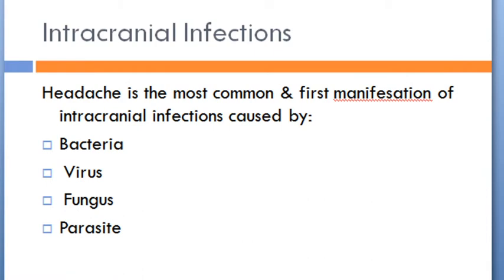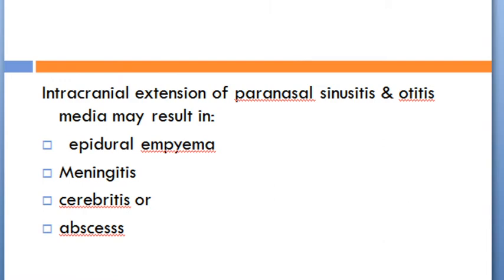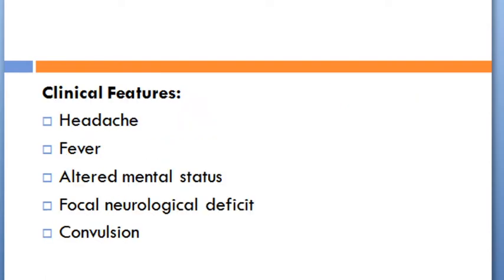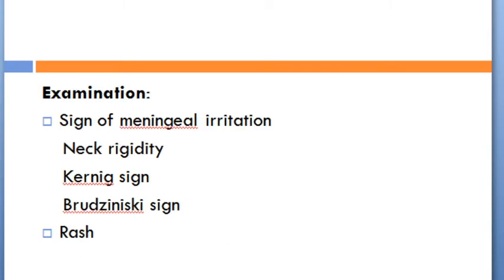Intracranial infection: headache is the most common and first manifestation of intracranial infection caused by bacteria, virus, fungus, or parasites. Intracranial extension of paranasal sinusitis and otitis media may result in epidural empyema, meningitis, cerebritis, or abscess. Clinical features include headache, vomiting, altered mental status, focal neurological deficit, and convulsions. On examination there may be signs of meningeal irritation such as neck rigidity, Kernig's and Brudzinski's signs, and skin rash.